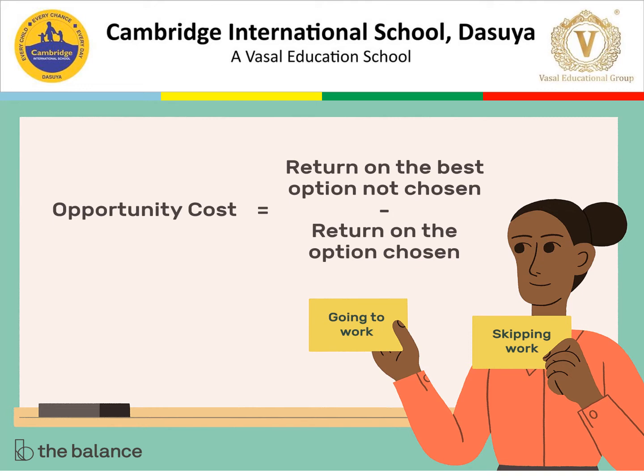Another example: going to work versus skipping work. If we are going to work, that means we have left the opportunity of skipping work. So that foregone option — skipping work — is the opportunity cost of going to work.